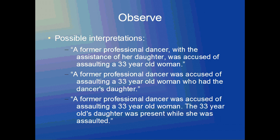Now here's my second interpretation: a former professional dancer was accused of assaulting a 33-year-old woman who had the dancer's daughter. Again, 'her daughter' is lexically ambiguous because it's not clear whether the daughter is with the dancer or the 33-year-old woman. And 'with,' again like in the first interpretation, is semantically ambiguous because it's not clear whether it's merely present or whether the daughter is being used to assault. But also, 'with' is lexically ambiguous because it's not clear whether the daughter is with the dancer or with the 33-year-old woman.